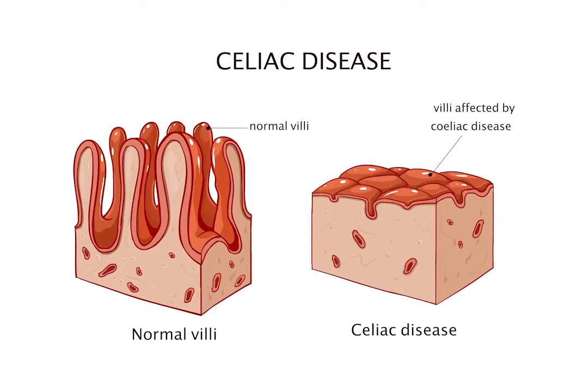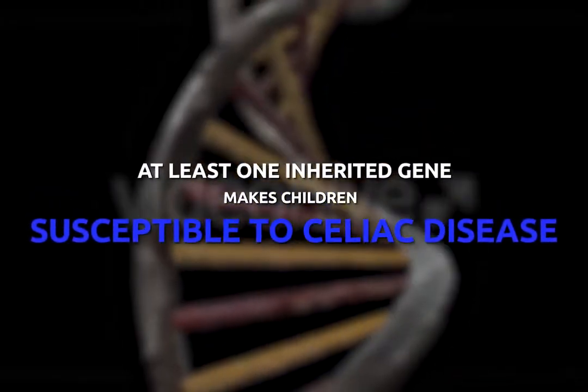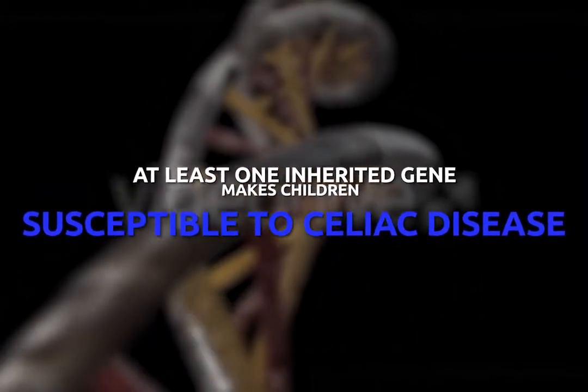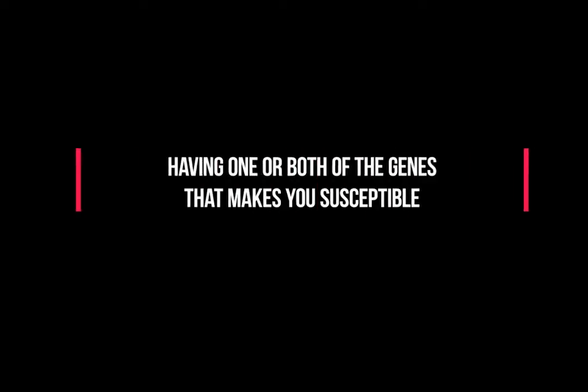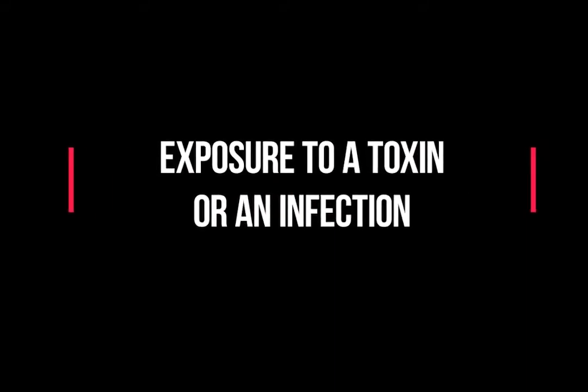We haven't figured out exactly why someone develops Celiac Disease, but we do know that people with Celiac Disease always inherit at least one gene from their parent that makes them susceptible. Just having the gene itself doesn't mean that someone will get Celiac Disease. There still has to be some sort of trigger from the environment, and some researchers believe that Celiac Disease may be triggered by the combination of having one or both of the genes that make you susceptible, being constantly exposed to gluten, and then finally being exposed to some sort of toxin or an infection.